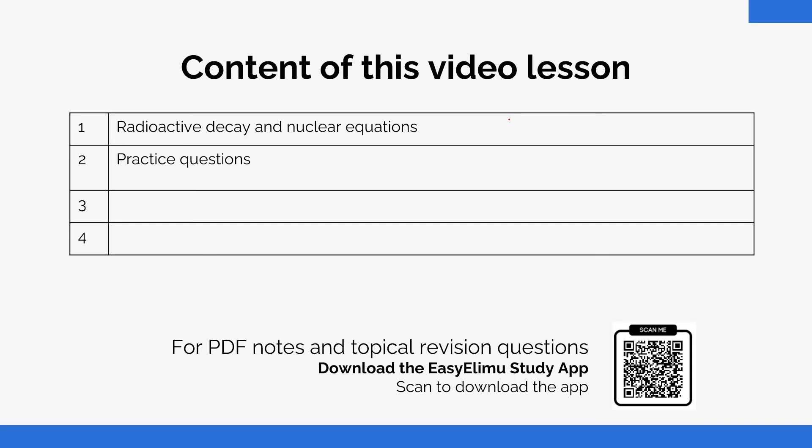We've already seen the different types of nuclear emissions that usually occur when radioactive materials decay. So we talked about the alpha particle, the beta particle, and the gamma rays. For today we are going to see how we can show using nuclear equations how such reactions usually occur.